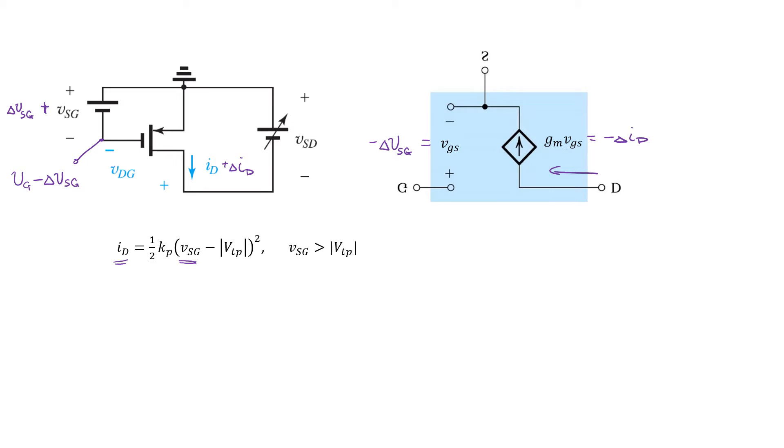So because of the double negative here, everything works out nicely. On the left, VSG increases and the current flowing out of the drain increases. On the right, VGS decreases. And so we've got small signal current flowing into the drain, which really represents an increase in the current flowing out of the drain.